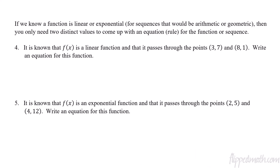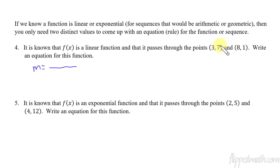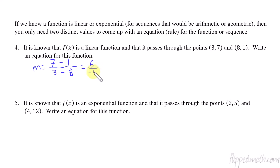If you already know a function is linear or exponential, you only need two points to create a rule. We know f(x) is a linear function passing through the points (3, 7) and (8, 1). First, find the slope: (7 minus 1) over (3 minus 8) equals 6 over negative 5, which is negative 6/5. It doesn't matter which y value you start with, as long as the corresponding x value is consistent.